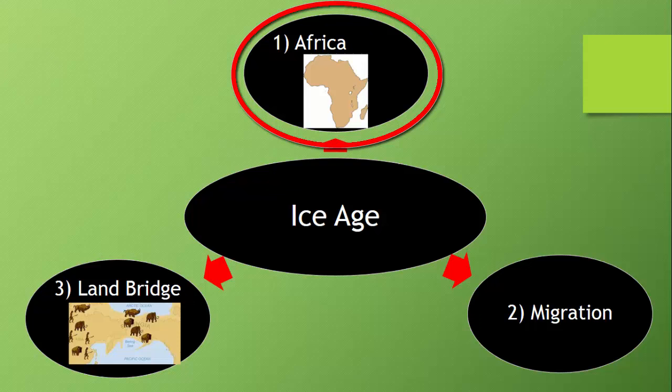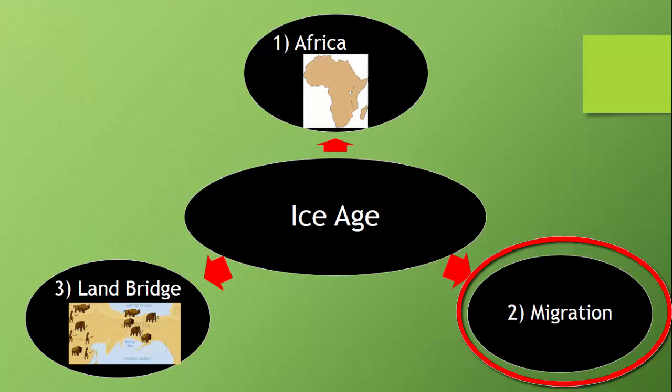Looking at bubble number one: hunter-gatherers originated in Africa. From Africa, about 100,000 years ago, they started to spread out to other continents — Asia, Europe, North America, and South America.